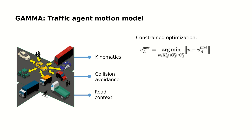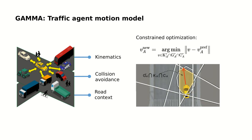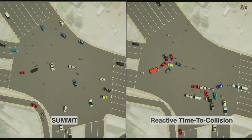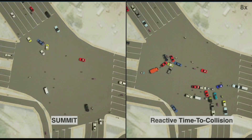The objective is to choose a velocity aligned to the agent's desired speed and path as much as possible, while being constrained by kinematics, collision avoidance, and the road context. Algorithmically, the model transforms to a quadratic programming problem with linear constraints and can be solved efficiently in linear time. Here is a side-by-side comparison with the reactive time-to-collision model — one can see that GAMMA provides much smarter and more complex interactions than the simple motion model.